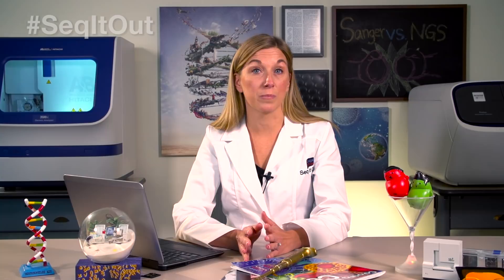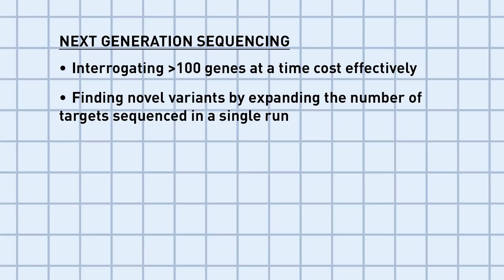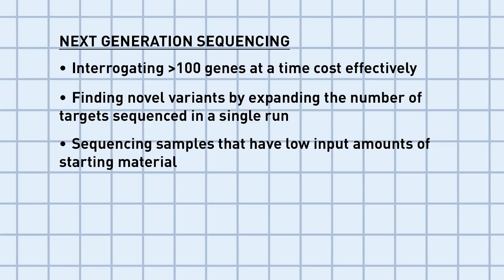Next generation sequencing offers fast turnaround time and takes only about four hours to complete a run. So NGS is perfect for interrogating greater than 100 genes at a time cost effectively, finding novel variants by expanding the number of targets sequenced in a single run, sequencing samples that have low input amounts for starting material — for example, Ion AmpliSeq library preparation, which requires as little as 10 nanograms of input DNA — and sequencing microbial genomes for pathogen subtyping to enable research of critical outbreak situations.